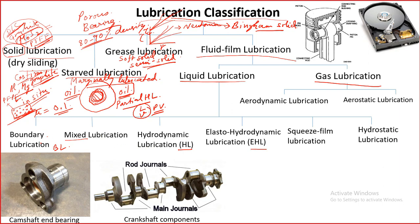This can be explained nicely with the Stribeck curve. When two surfaces with some convergence are present and one is moving relative to the other, with fluid between them, the no-slip wall boundary condition causes the moving surface to pull the liquid inward. Since there is a convergence, the liquid has little space to flow through, so pressure builds up — and that is what we call hydrodynamic pressure. This principle works for all these kinds of lubrication systems.